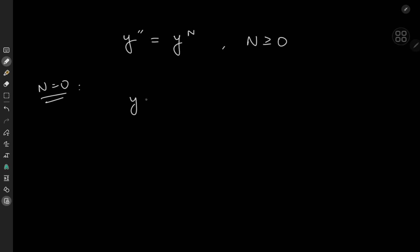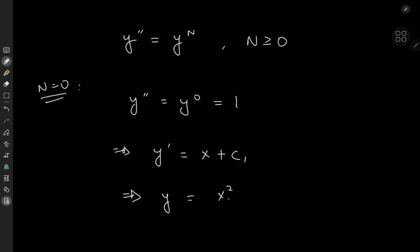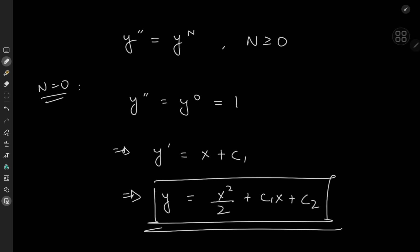If n equals 0 then we have y double prime equal to y to the 0, which of course equals 1. On integration we have the first derivative equal to x plus some constant of integration c sub 1, and again on integration we have the function y equal to x squared over 2 plus c sub 1 times x plus another constant of integration c sub 2.